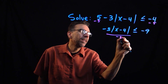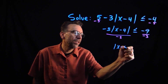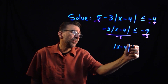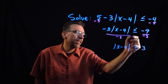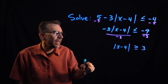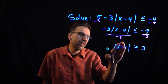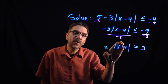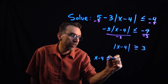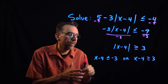Once we're here, we divide by negative 3 — the negative threes cancel — leaving the absolute value of x minus 4 isolated. But remember, when we divide by a negative number we must reverse the inequality, so less than or equal to becomes greater than or equal to. Now we apply the theorem: the absolute value greater than means x minus 4 must be less than or equal to negative 3, or x minus 4 must be greater than or equal to 3.